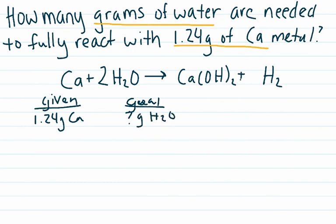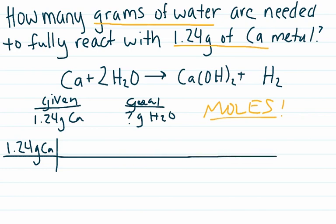Now remember, this is stoichiometry, so the golden rule is convert to moles. Never forget to convert to moles. Okay, so we'll start with what we're given, 1.24 grams of calcium. The first step of stoichiometry is always to take what you're given and convert that to moles.